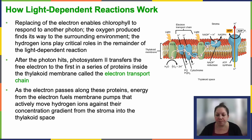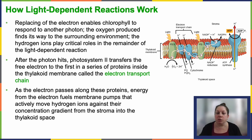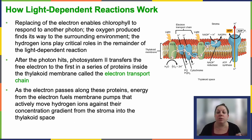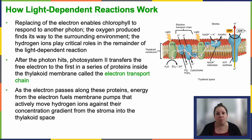Photosystem two is the first one, and the freed electron passes through a chain of proteins — you can see in the picture it moving through that chain of proteins within the thylakoid membrane. As the electron moves along the chain, it fuels the action of membrane pumps that actively transport hydrogen ions from the stroma into the thylakoid space. Hopefully this sounds familiar because this is really similar to how we do oxidative phosphorylation. This process creates an electrochemical gradient, very similar to what happens in the mitochondria when hydrogen ions are pumped across the inner mitochondrial membrane.